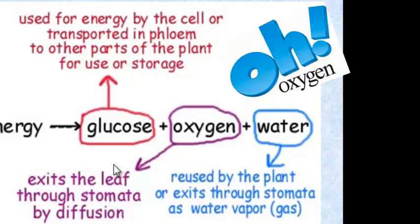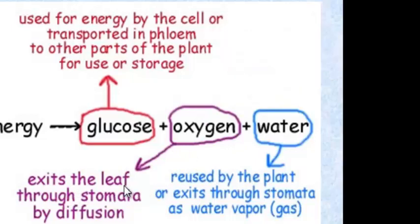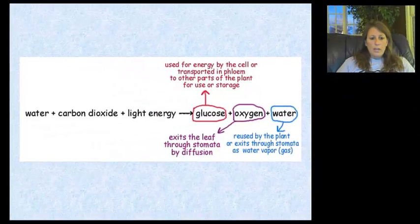Oxygen is going to leave the leaf — plants give off oxygen and we breathe in oxygen — and it exits through the stomata and guard cells. The water produced is going to be recycled or reused, and of course the plant will lose some water vapor when the stomata are open.